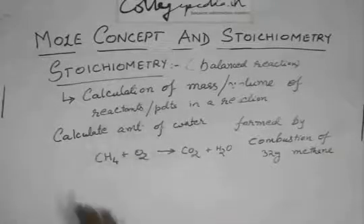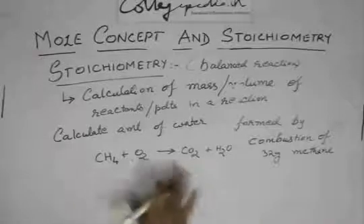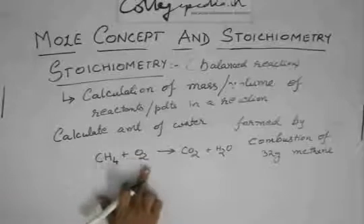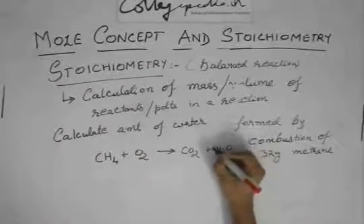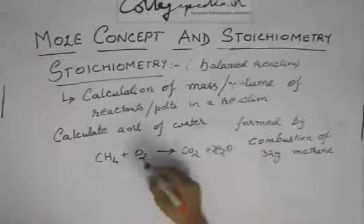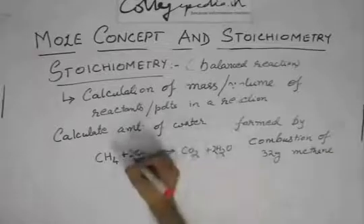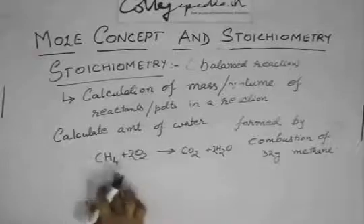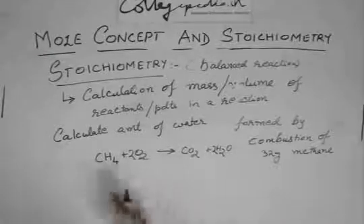So how to balance this? Just use hit and trial, no need to use POAC and stuff. Remember, C and C are okay. H4, O2, and this would be, I think, H2O would do. This two would do because H4, H4, O2, here there are four, so okay, 2O2. So see, C1, H4, H4, O4, O4. Simple balancing.